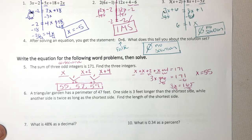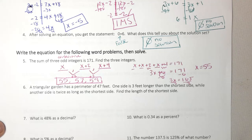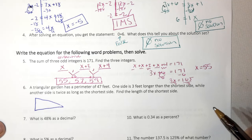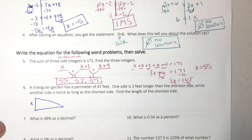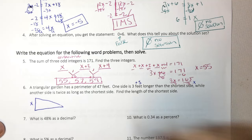A triangular garden has a perimeter of 47. Right away, I know I'm talking about a triangle. And it says one side is three feet longer than the shortest side, while another side is twice as long as the shortest side. Find the length of the shortest side. Well, we don't know the shortest side. So we're going to use x to represent what we don't know. Three feet longer is going to be plus three than the shortest side, which is x. So when I write that proper, I have x plus three.